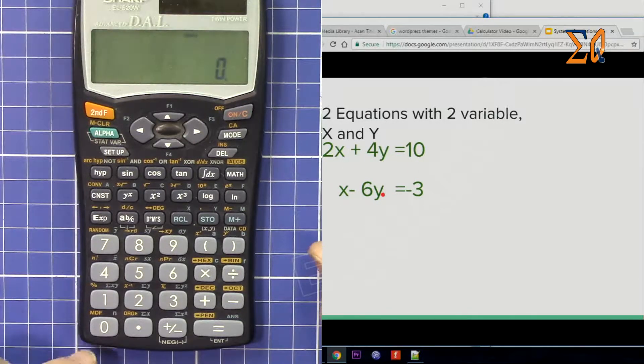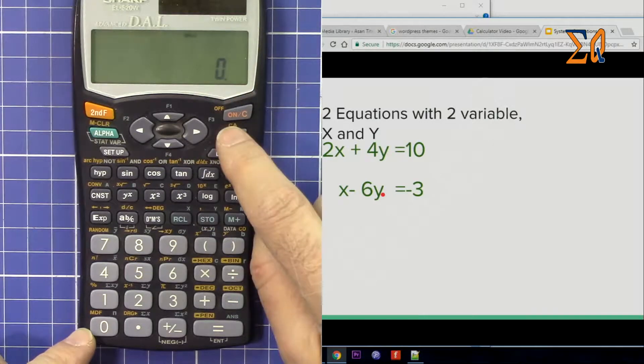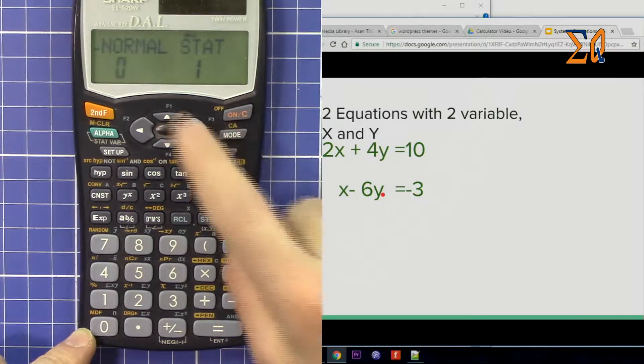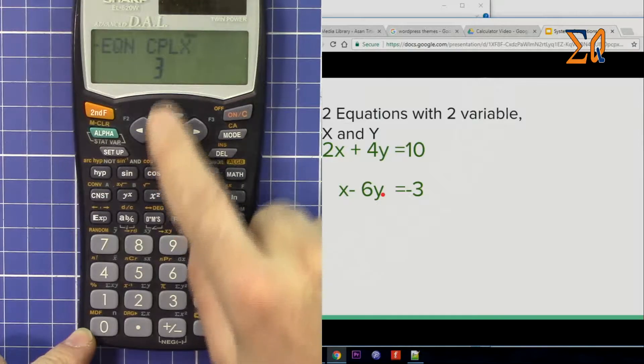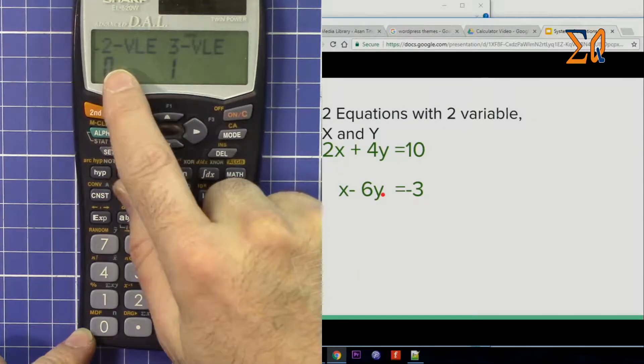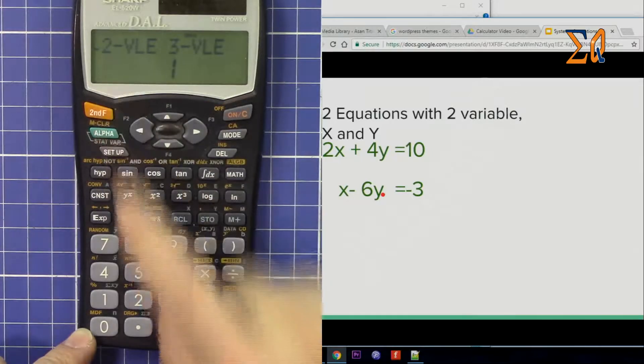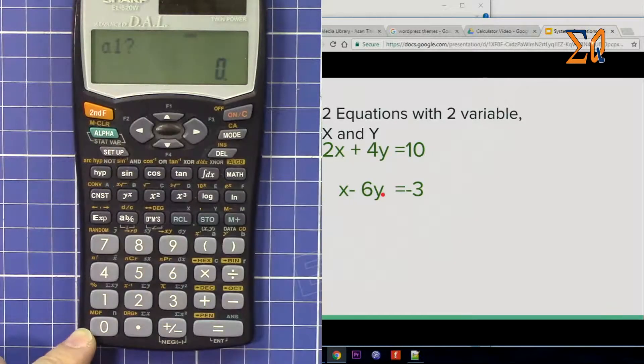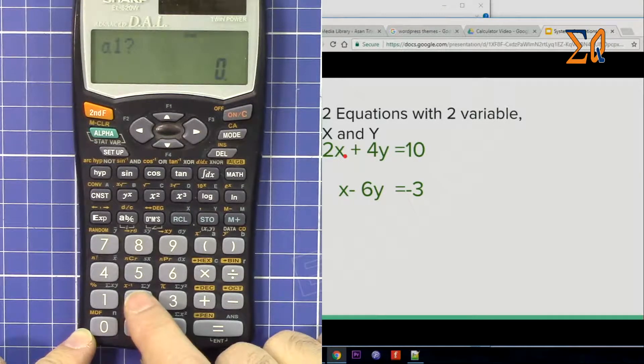To do that, press Mode and then use the arrow to go down to Equation. Press 2 for two equations. Now we have options for two or three variables. For two variables, press 0. Now enter A1, which is the coefficient of X in the first equation.